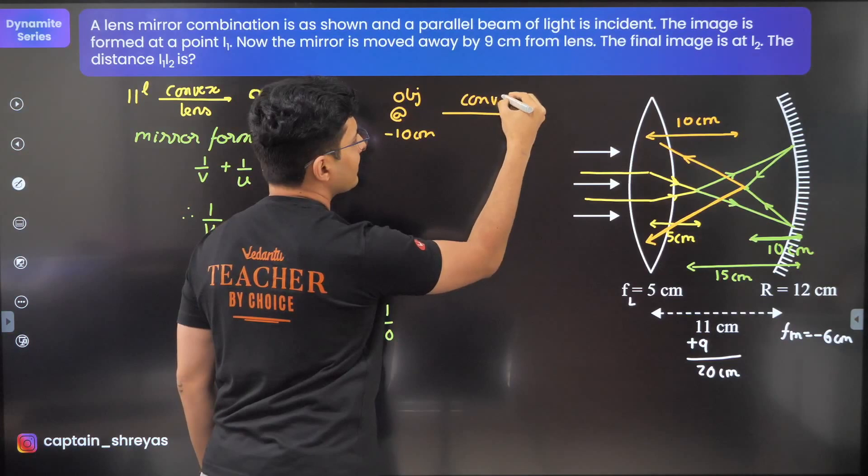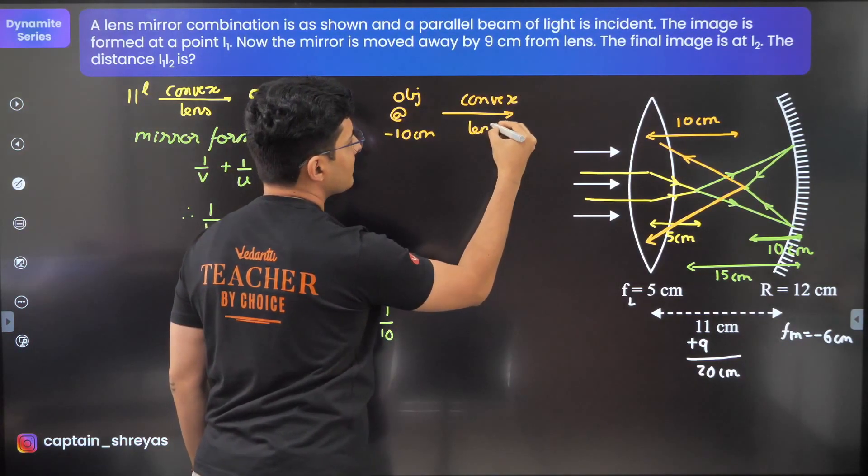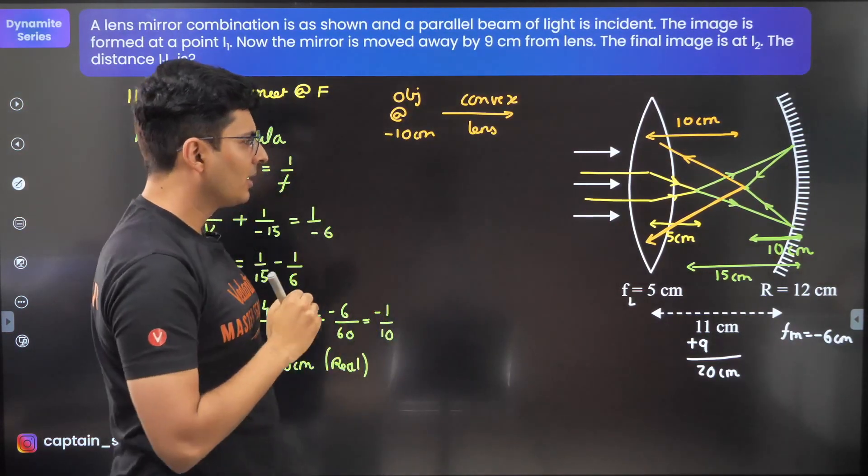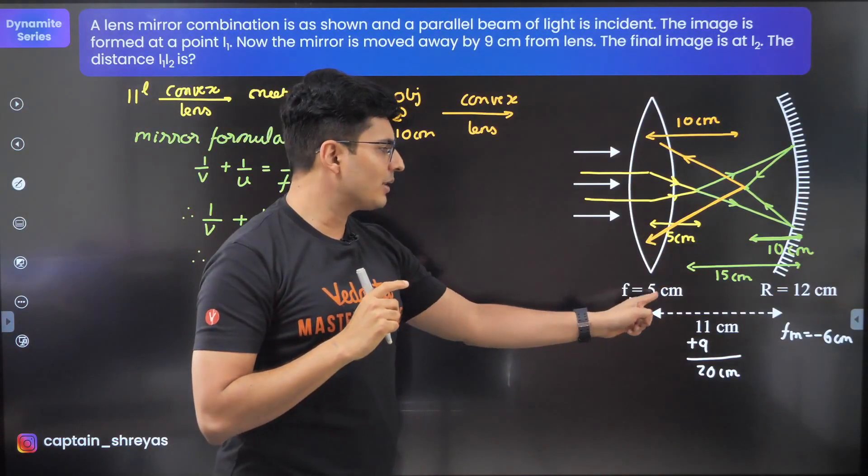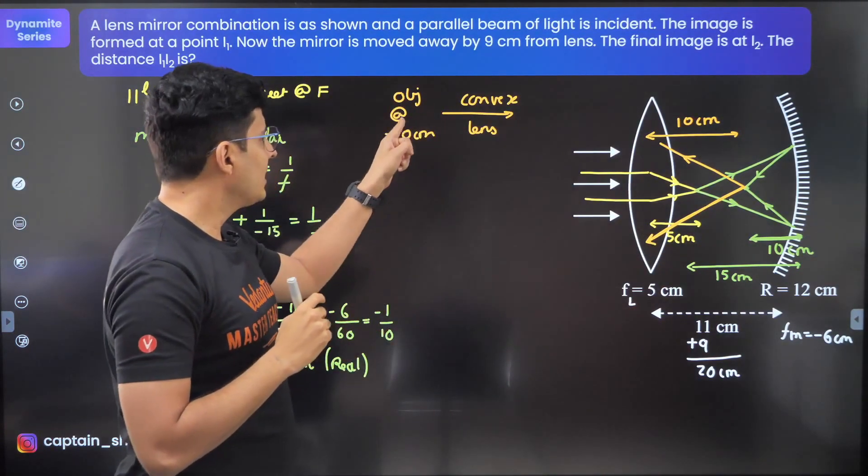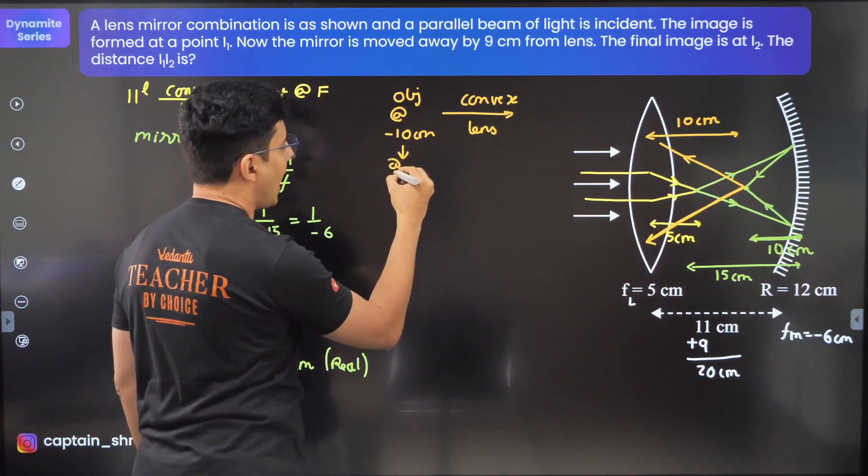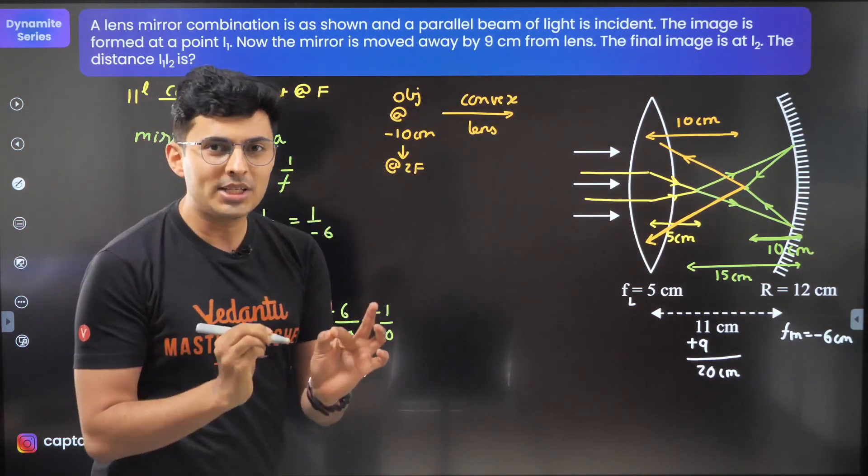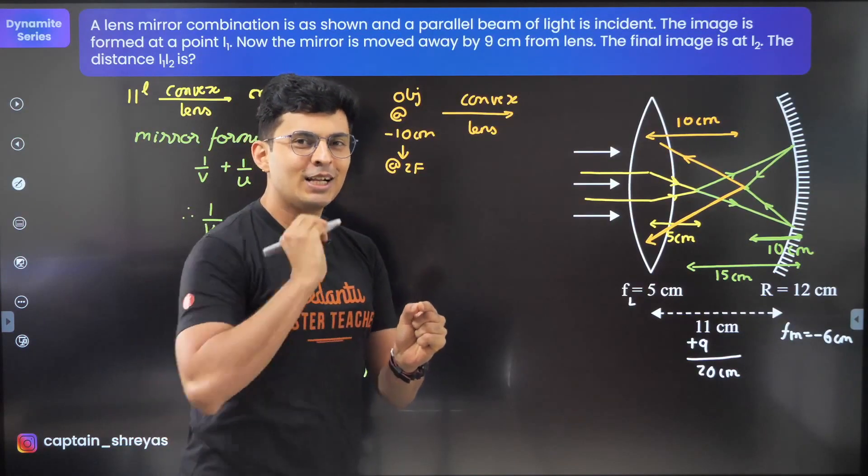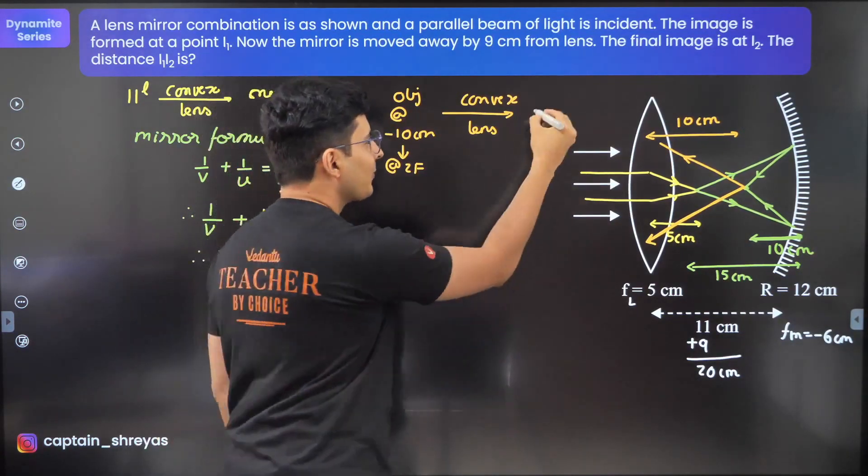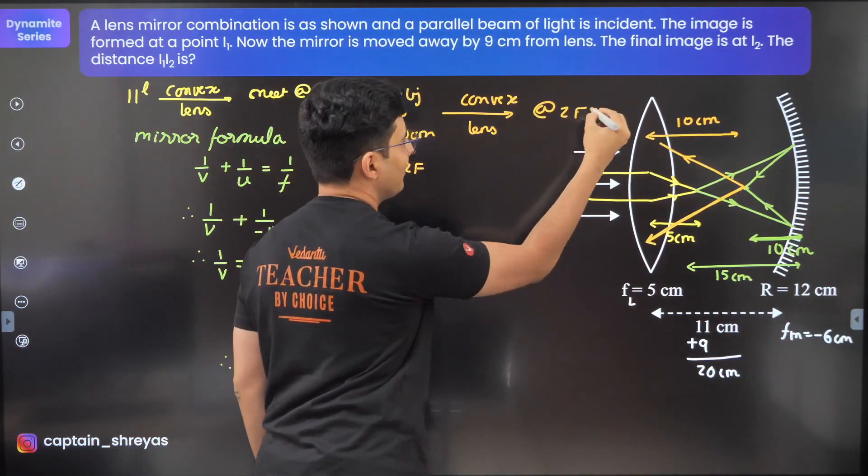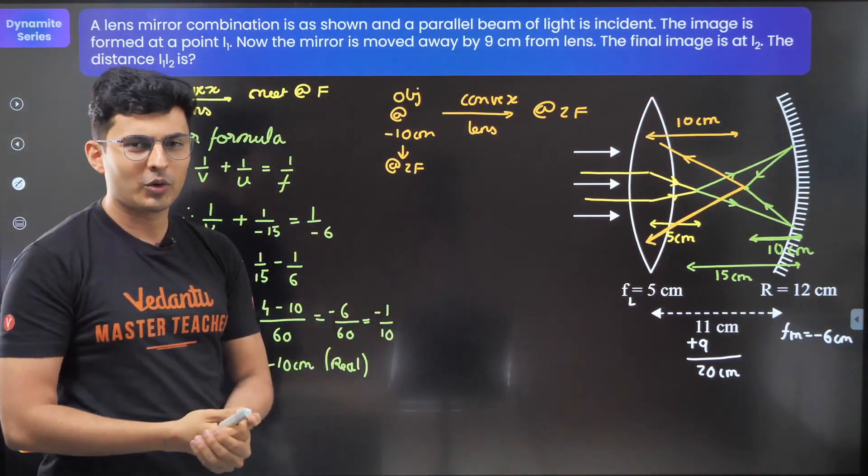After the convex lens, where will the image be formed? The focal length is 5 centimeters. 10 is twice of f, so basically this is at 2f. If you place an object at 2f for a convex lens, the image is also formed at 2f. That's the symmetry.